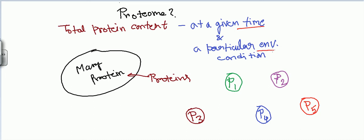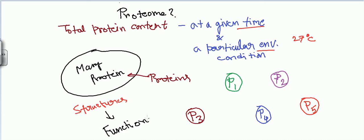Suppose inside this cell, at a particular time and at a particular environmental condition — say 27 degrees Celsius with optimum moisture — all five proteins are present. Now, if we know how the proteins look, meaning their structure, that is very important. Structures always tell us what the function of a protein is — this is a very important relationship in the case of proteins.